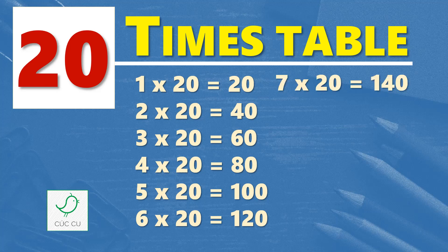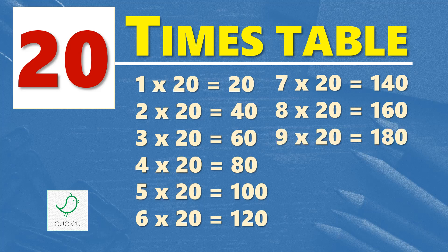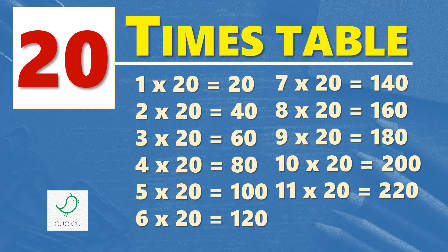Seven times twenty are one hundred and forty, eight times twenty are one hundred and sixty, nine times twenty are one hundred and eighty, ten times twenty are two hundred, eleven times twenty are two hundred and twenty, twelve times twenty are two hundred and forty.